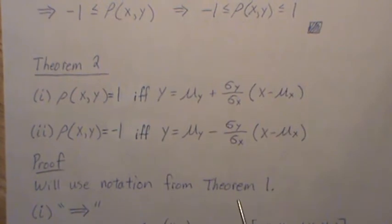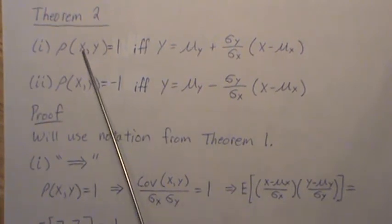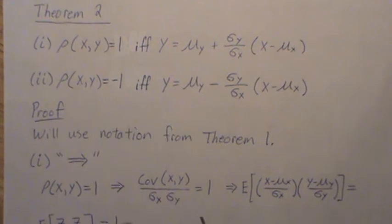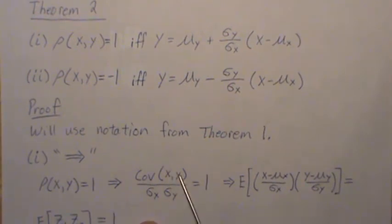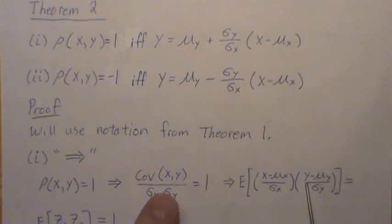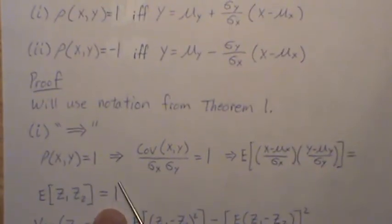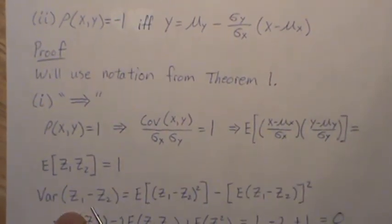To simplify things we're going to use the notation from Theorem 1. Let's go — proof of part 1 — and we're going to go in the direction which means we assume the correlation equals 1. Now this is exactly the definition of correlation, and we also noted we can write it equivalently as the expected value of z1 times z2. So E[z1·z2] equals 1, by the assumption we're making.